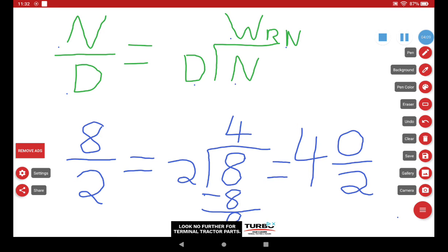Or instead of saying four and zero halves, usually we just say four. So if you use the half cup measure and you scooped it eight times, that means you put in four cups of flour.